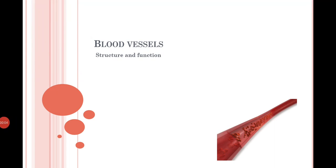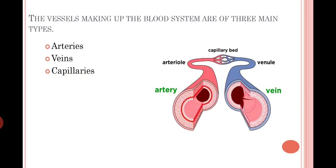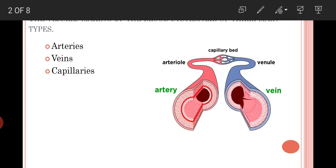Hello everyone. In this video lesson we are going to discuss blood vessels — their structure and function. There are three main blood vessels which make up the blood system: the arteries, the veins, and the capillaries. These blood vessels are important because they help in the transport of nutrients and oxygen in our body, and they help return the deoxygenated blood back to the heart.